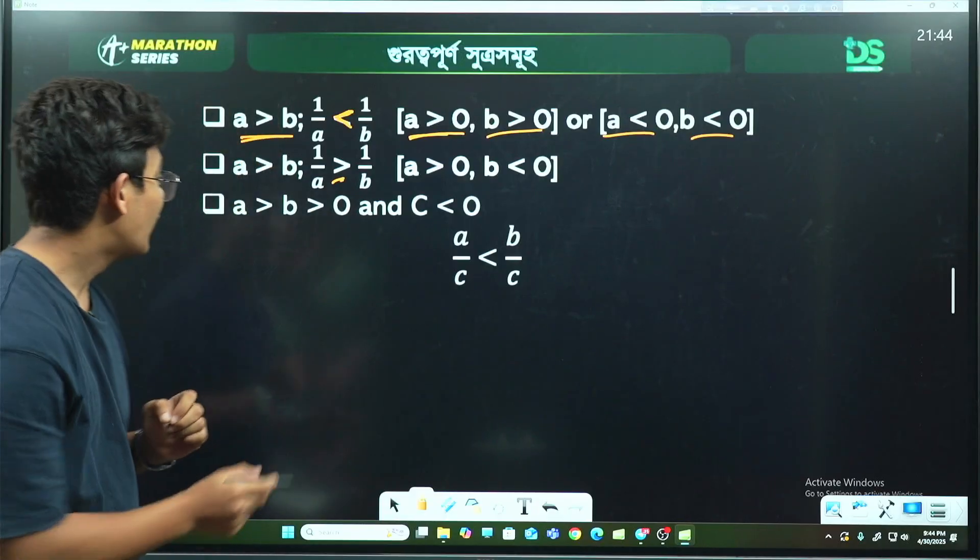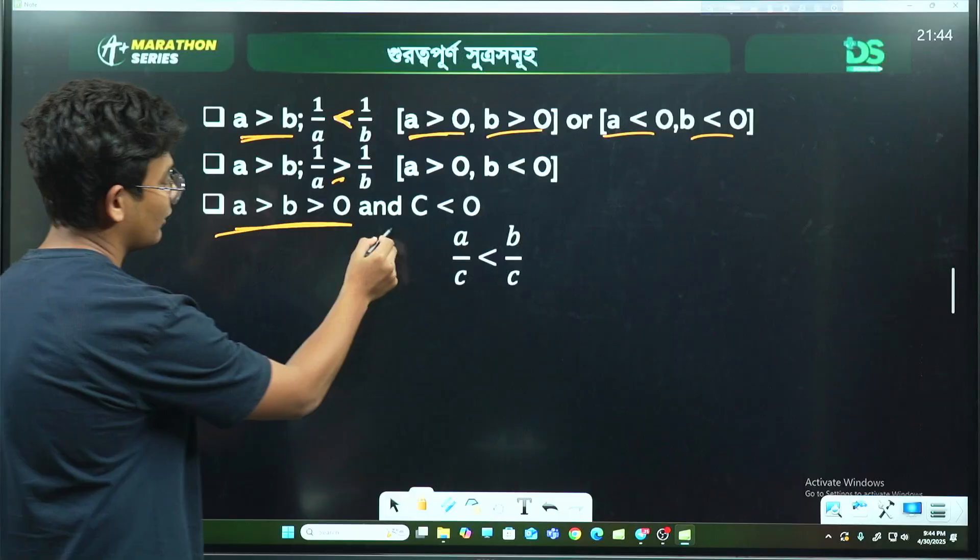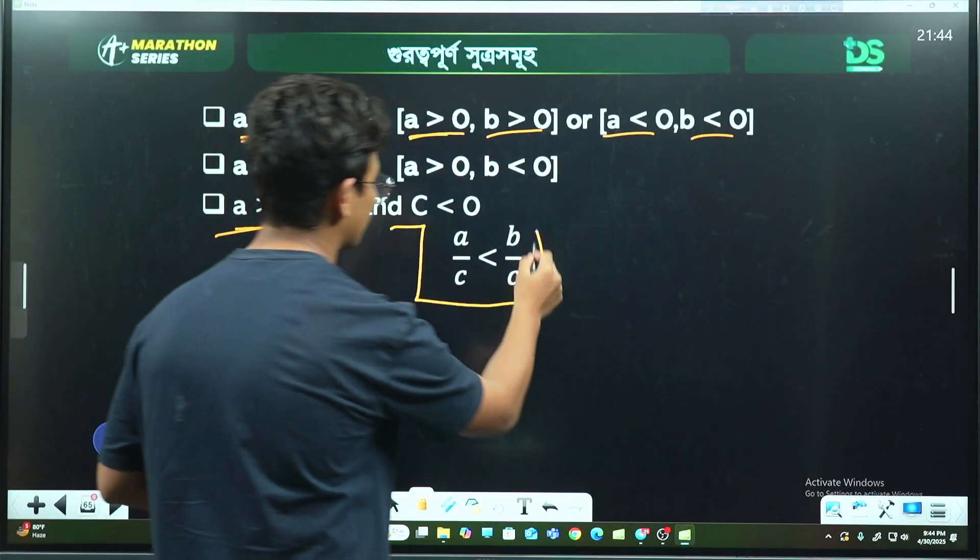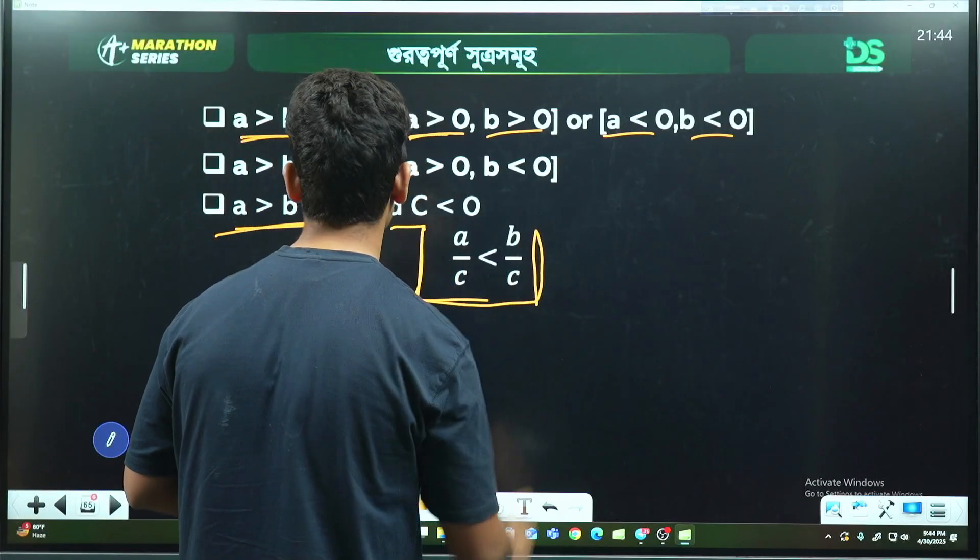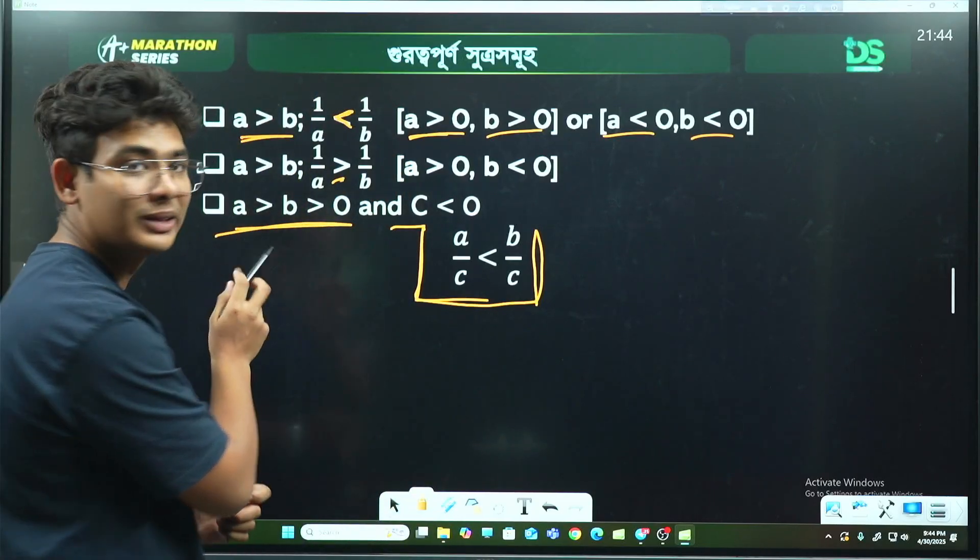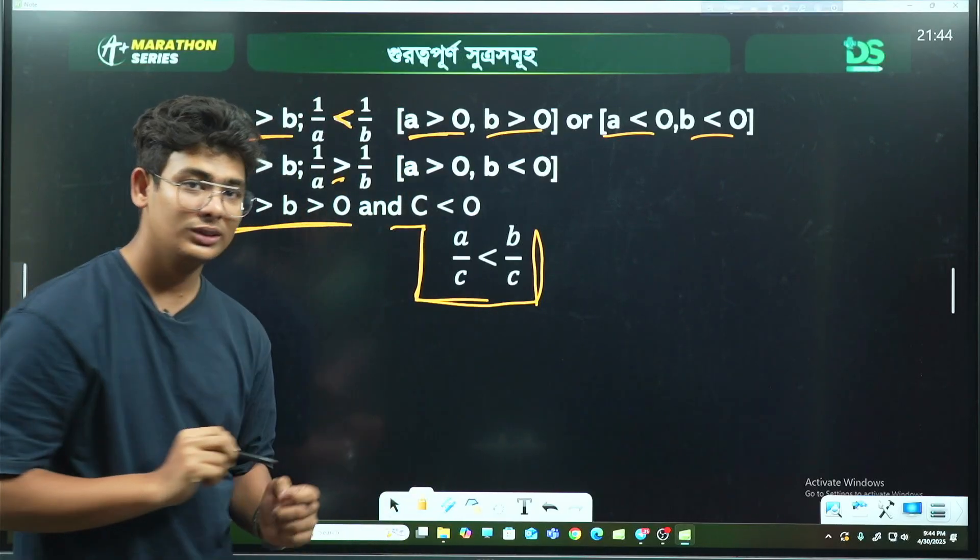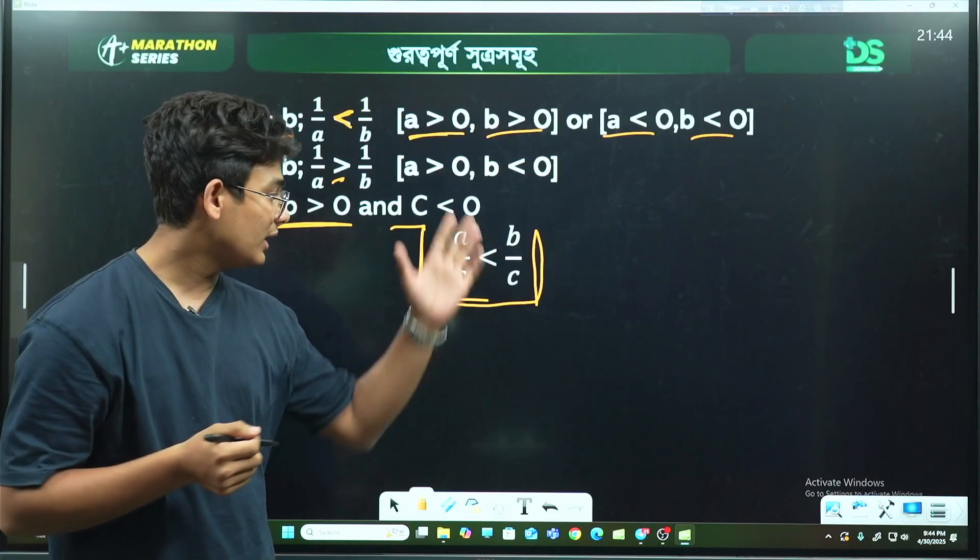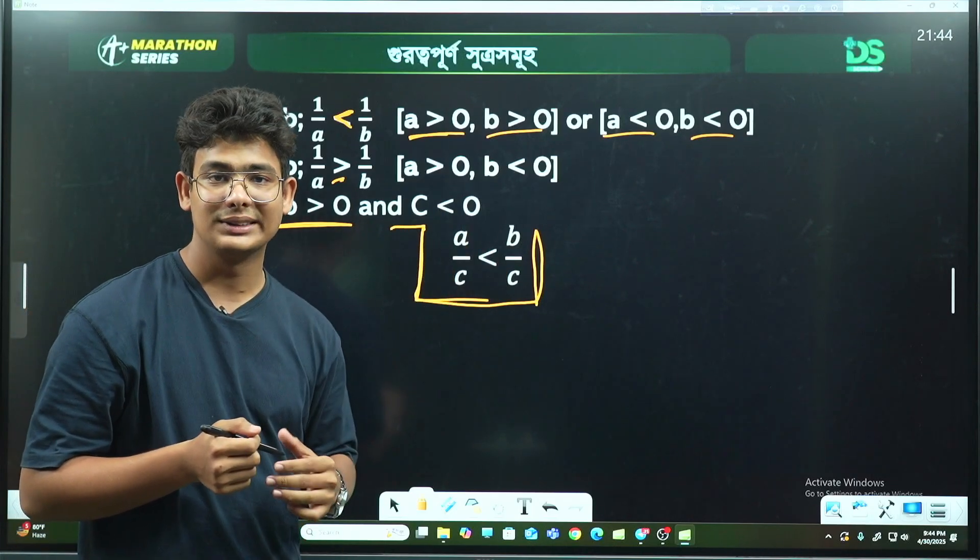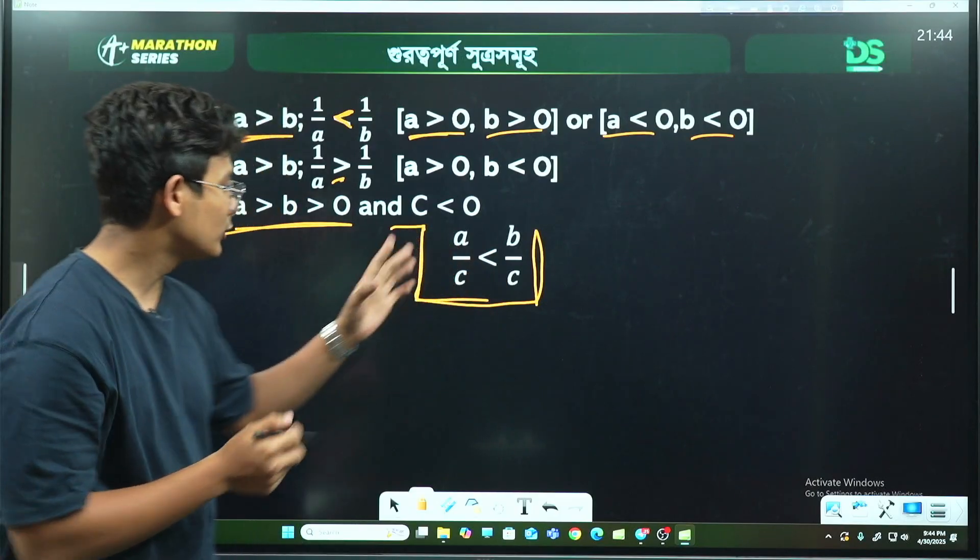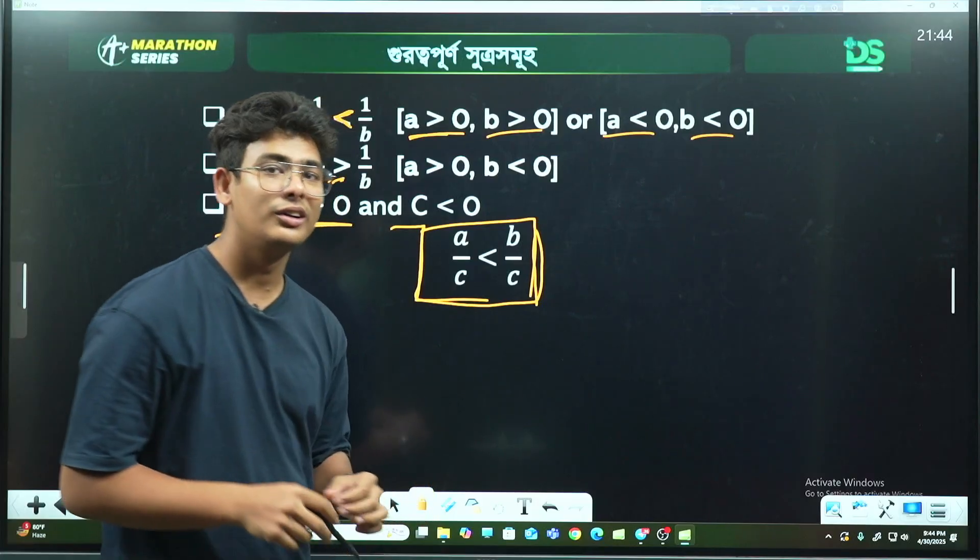Let me explain this formula in more detail. When applying this to questions, remember: if a > b and c < 0, then a/c smaller than b/c. The key is understanding when the sign changes based on whether you're dividing by positive or negative.